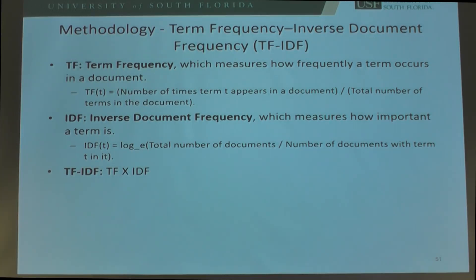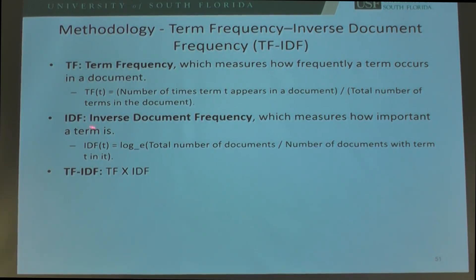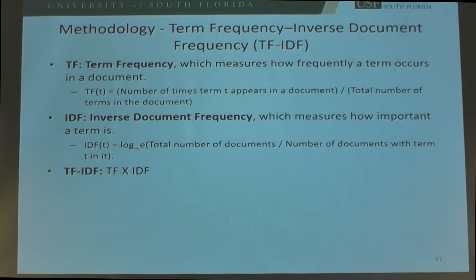TF-IDF considers that some words have very high frequency but are not important — like 'the' in a document. IDF tries to identify important words that appear with high frequency in one document but less in others. For example, in all my papers, my name appears and is important for finding that paper — easier than using high-frequency words like 'the'. TF-IDF multiplies term frequency and inverse document frequency together. However, this was designed for natural language processing contexts, and we don't know whether transportation networks have the same features.